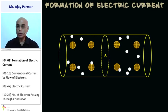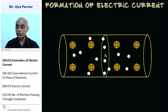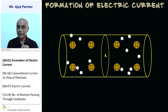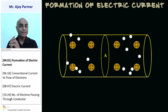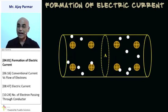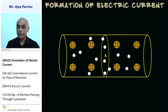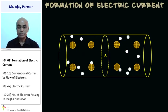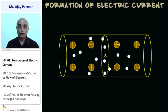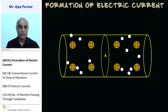What happens is that the number of electrons passing through the cross-section from one side to the other remains exactly identical in both directions. So the net flow of electric charge or electric current is zero — there is no flow of electric current in such a condition.